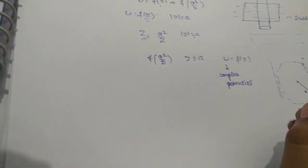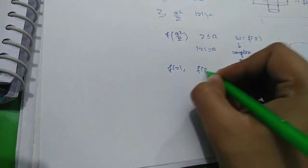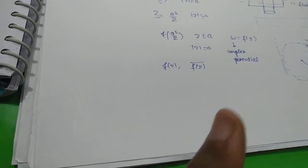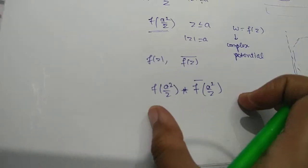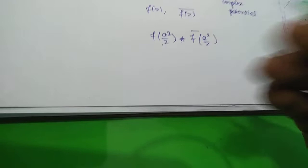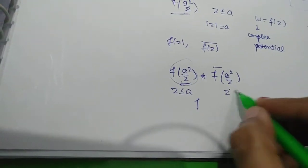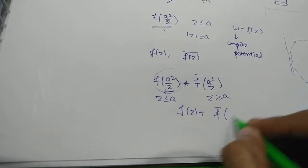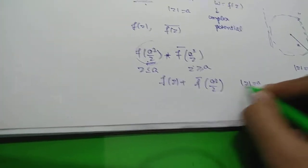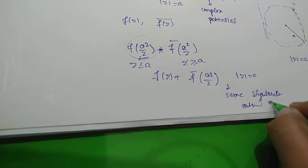Since z and a²/z are inverse points with respect to the circle mod z = a, if f(a²/z) has singularities inside the circle, then we know that f(z) and f(z) conjugate always have the same number of singularities. So f(a²/z) and f̄(a²/z) have the same singularities inside the circle, meaning the conjugate's singularities are outside. Therefore fz and f̄(a²/z) have the same singularities outside the circle.